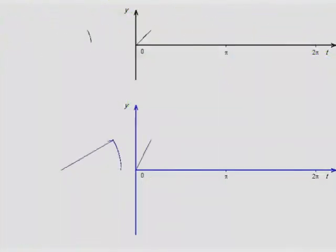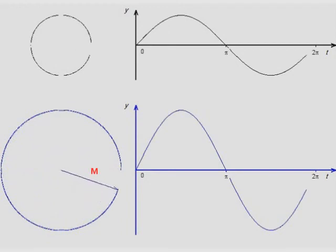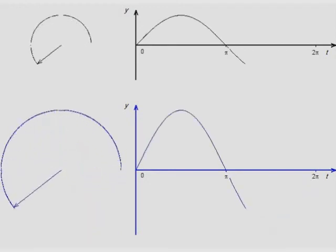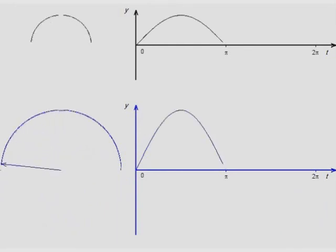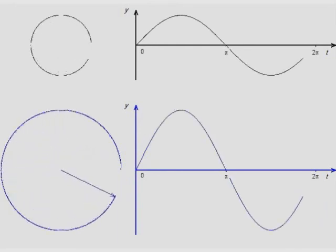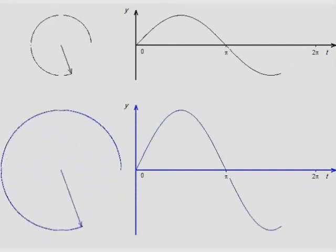Now let us look at a phasor having a different magnitude M. We can see that the phasor is represented by a longer arrow. This phasor is rotating with the same angular velocity and its vertical component is being projected as we've already seen.